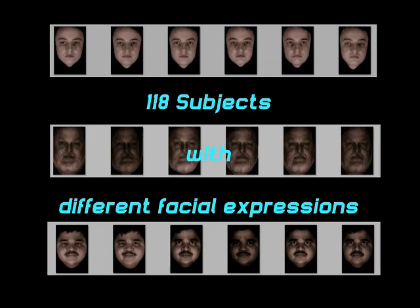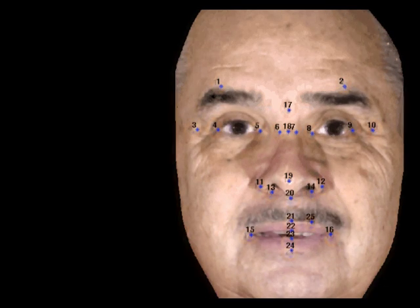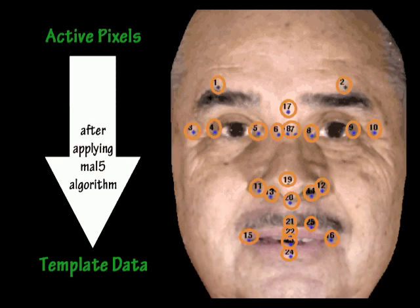The database contains 180 subjects with different facial expressions. Each image contains 24 active pixels on which we apply the Malpha algorithm to get template data of the subject which is used to correlate the image.